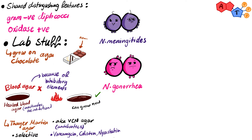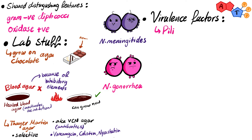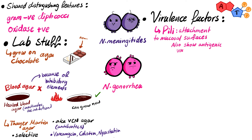Now let's move to the shared virulence factors. First we have pili, which allows attachment to mucosal surfaces. These pili also display antigenic variation, which makes it difficult for our immune system to target them, because they always change their camouflage.